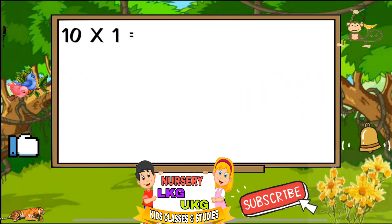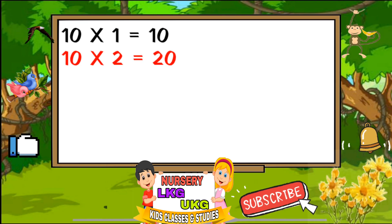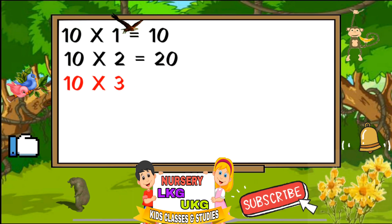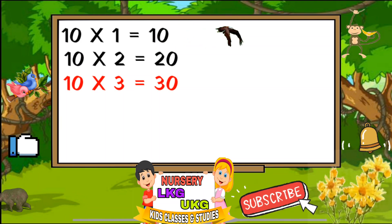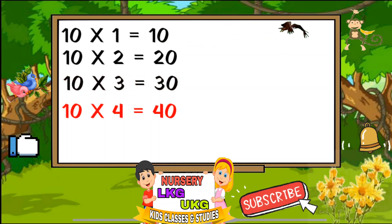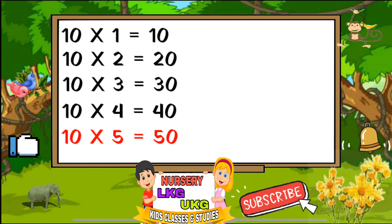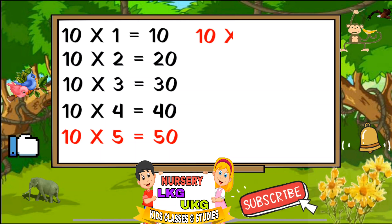Ten ones are ten. Ten twos are twenty. Ten threes are thirty. Ten fours are forty. Ten fives are fifty.